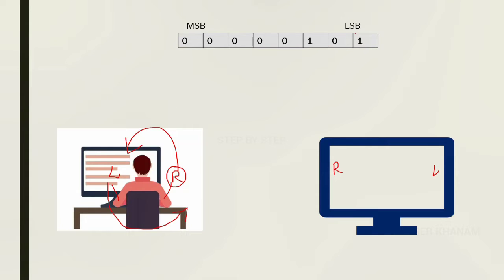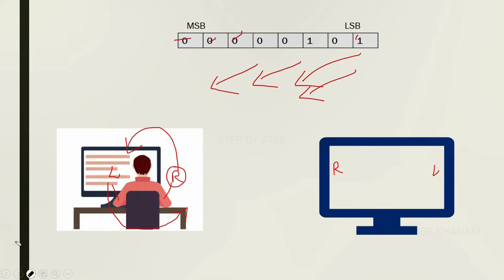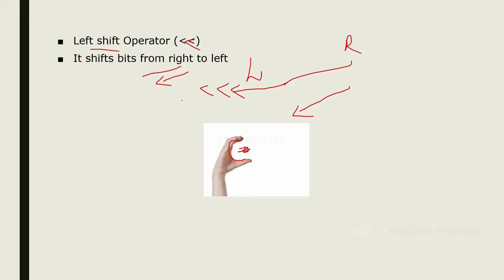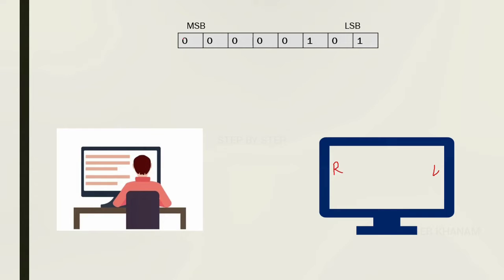In right shift, the LSB bits were getting removed. But in left shift, the MSB — most significant bits — will be removed. The bits shift in position. This is the only basic difference between left shift and right shift. In right shift, bits move left to right and LSB is removed. In left shift, bits move right to left and MSB is removed.